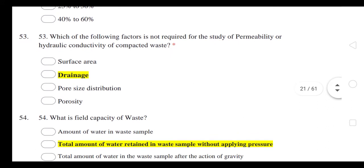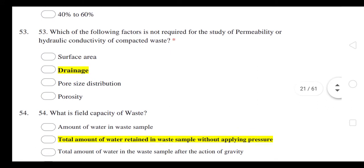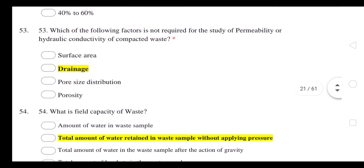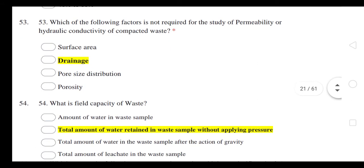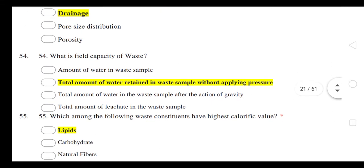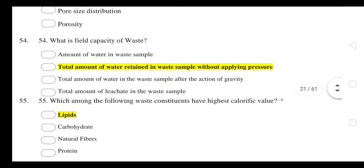Which of the following factors is not required for the study of permeability or hydraulic conductivity of compacted waste? The answer is drainage. What is field capacity of waste? It is the total amount of water retained in a waste sample without applying pressure.